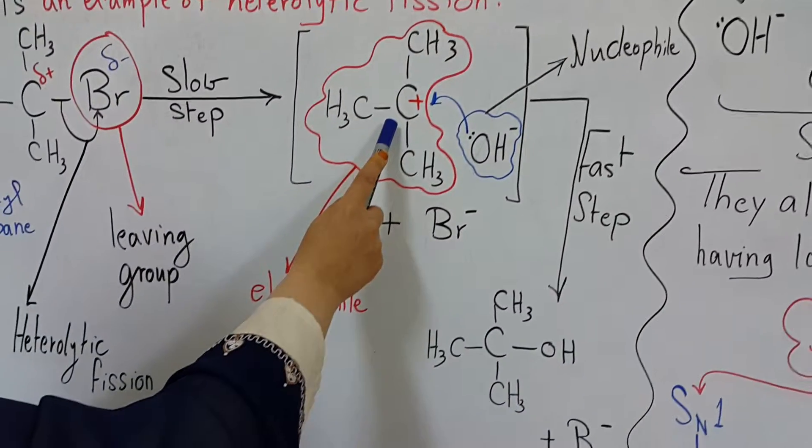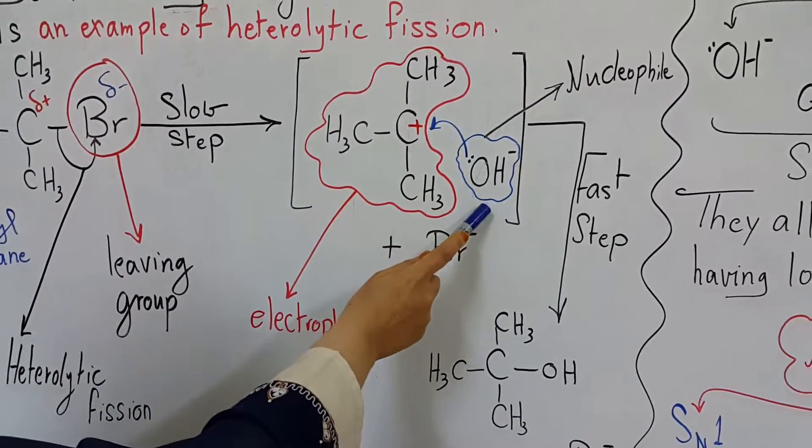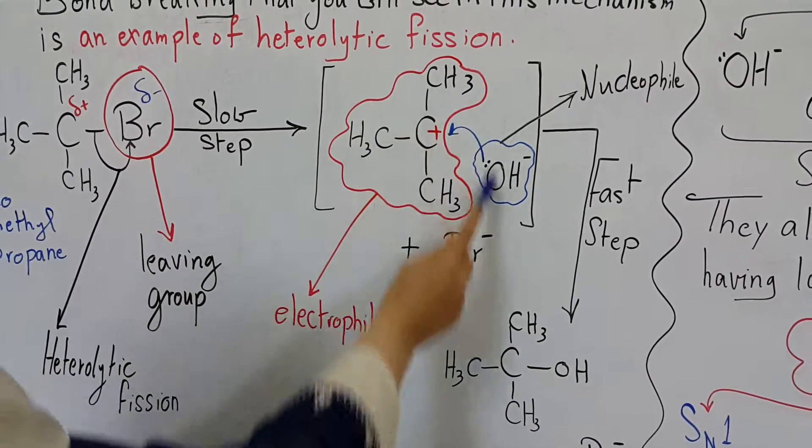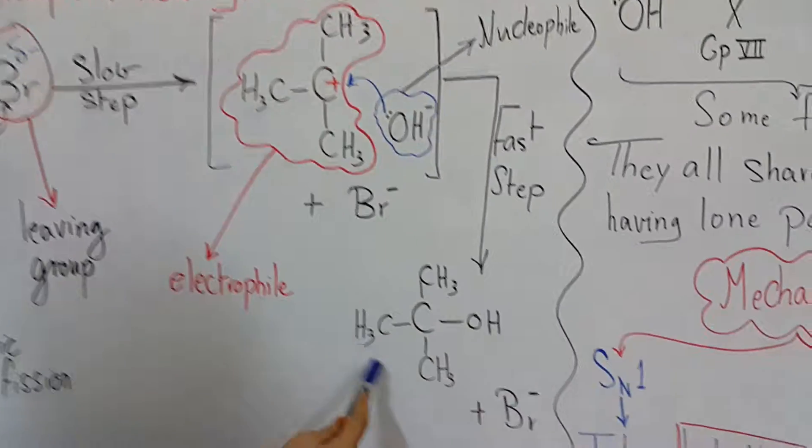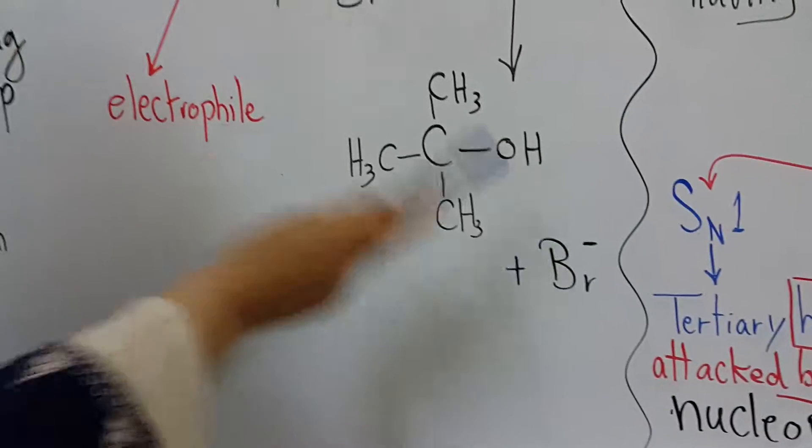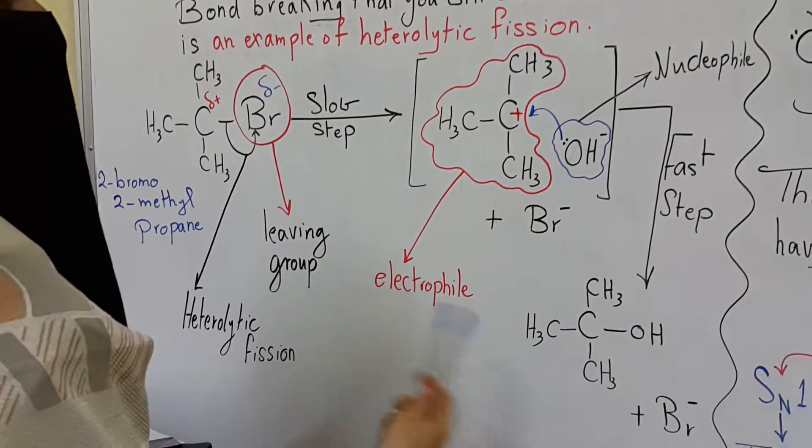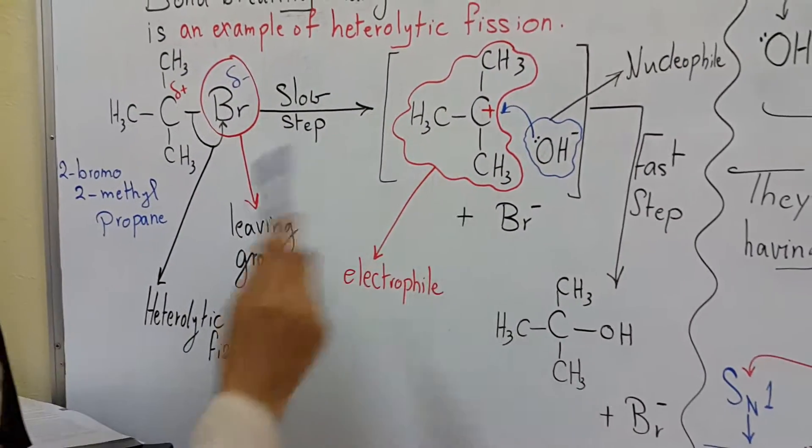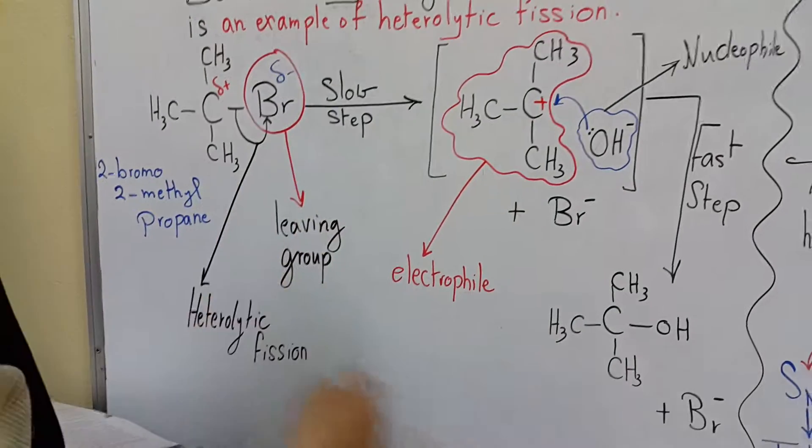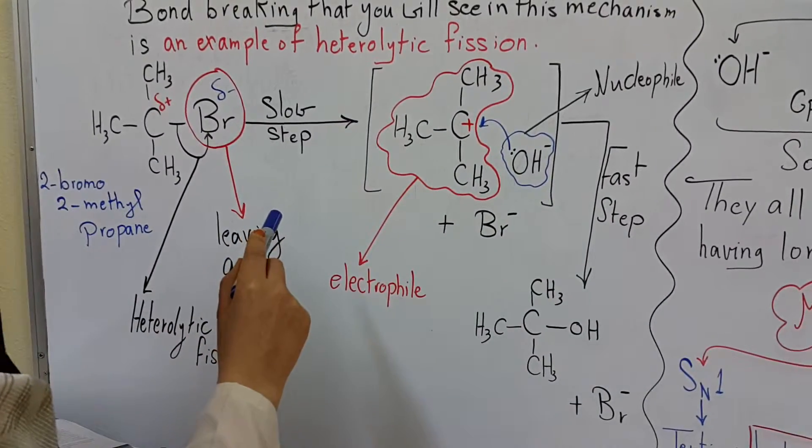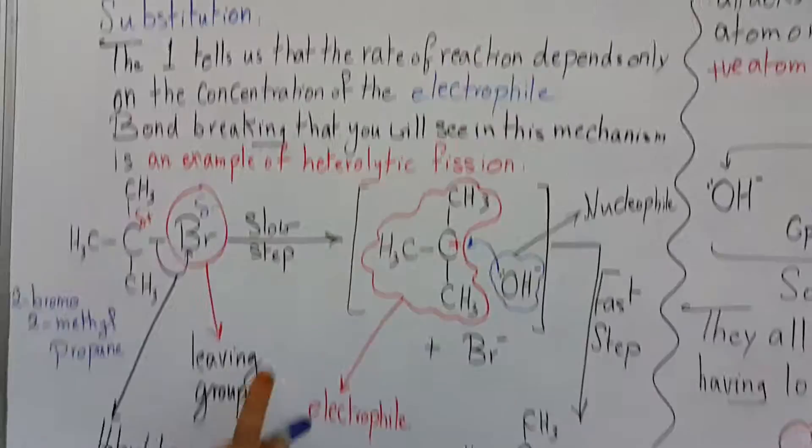During the attack, the nucleophile attacks the carbocation intermediate. The intermediate is the electrophile. After the attack, a tertiary alcohol will form, and the bromide ion will combine with cations present, such as sodium, forming sodium bromide. This reaction is an example of nucleophilic substitution reaction of the first order, SN1 mechanism.